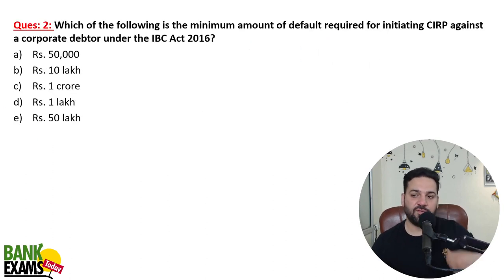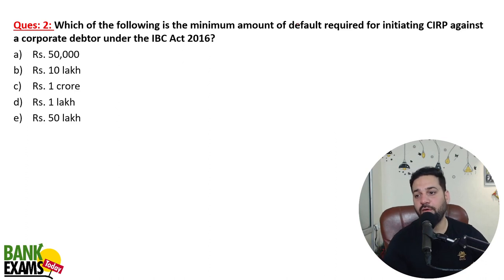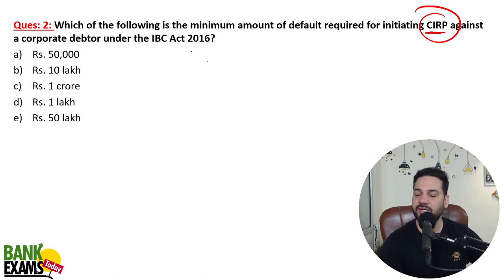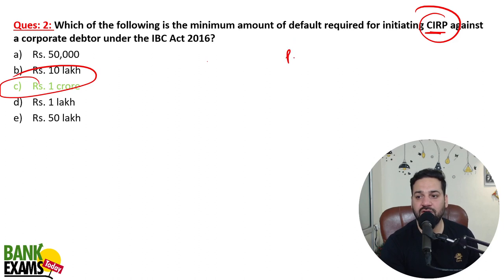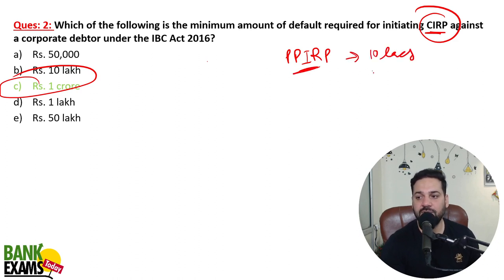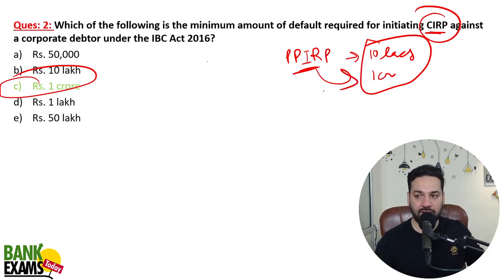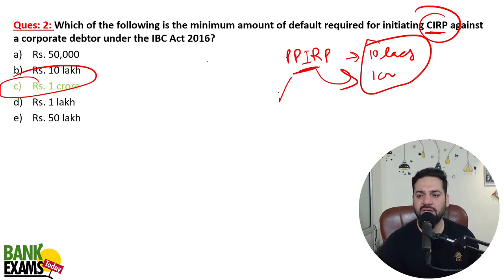Which of the following is the minimum default required for Corporate Insolvency Resolution Process (CIRP)? For CIRP, the minimum default is 1 crore. For Pre-Packaged Insolvency Resolution Process (PPIRP), the minimum is 10 lakhs and the maximum is 1 crore. So for pre-packaged, minimum is 10 lakhs and maximum is 1 crore, while for CIRP, the minimum is 1 crore.